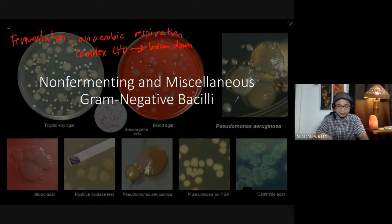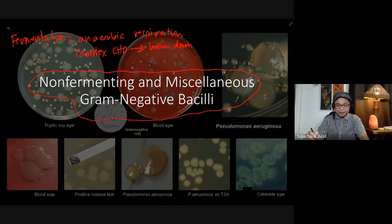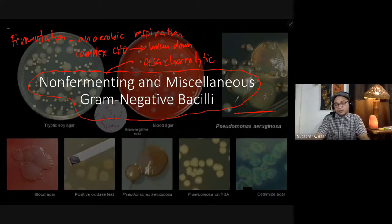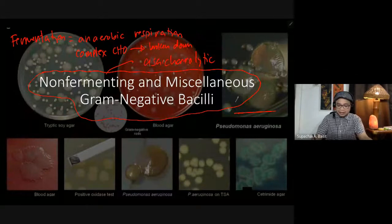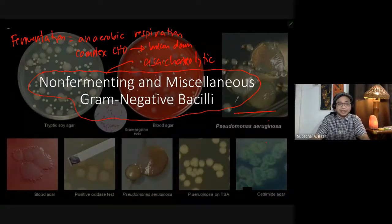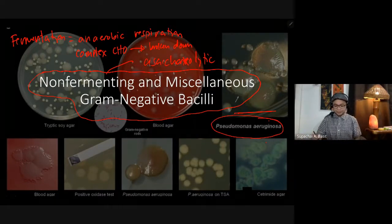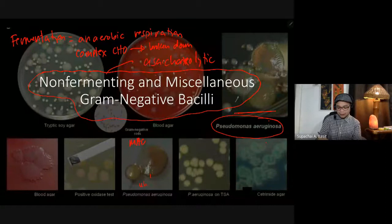For this particular group of bacteria, we are dealing with non-fermenters, meaning this group is called asaccharolytic — primarily because they cannot ferment any carbohydrates at all. The most popular among these non-fermenting gram-negative bacilli is Pseudomonas aeruginosa. You would notice that in MacConkey Agar they produce white colonies.